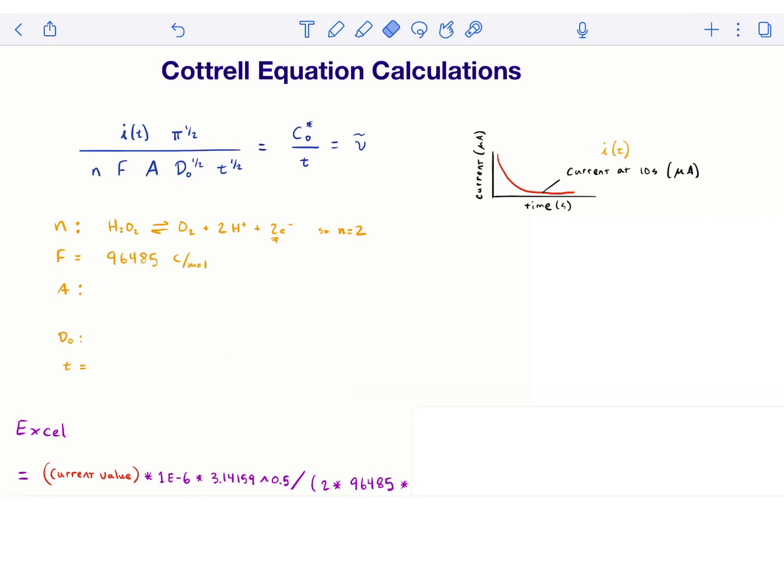F is Faraday's constant, 96485 coulombs per mole. This is the charge on a mole of electrons.